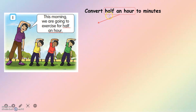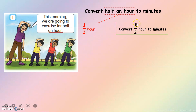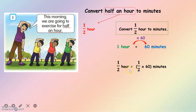First, half an hour equals 1 over 2 hour. To convert half an hour to minutes, since the hour value is 1 over 2, we multiply by 60. So 1 over 2 times 60 gives us minutes. Here is the way to solve questions involving fractions and whole numbers.